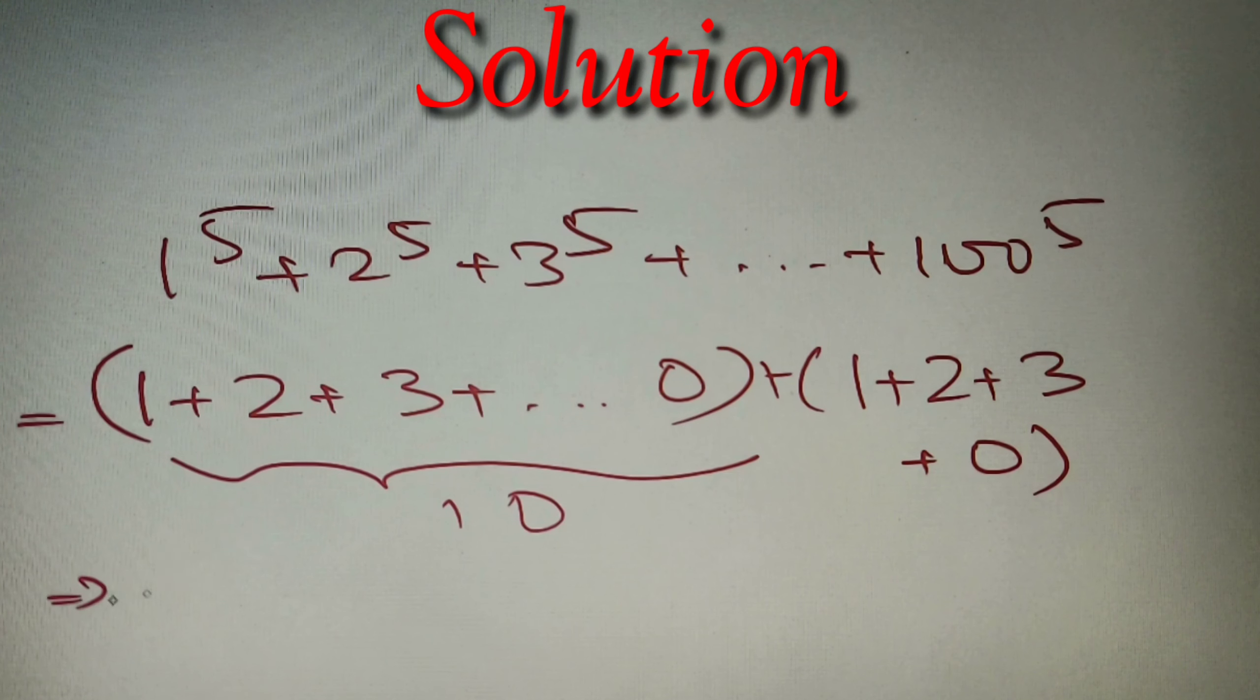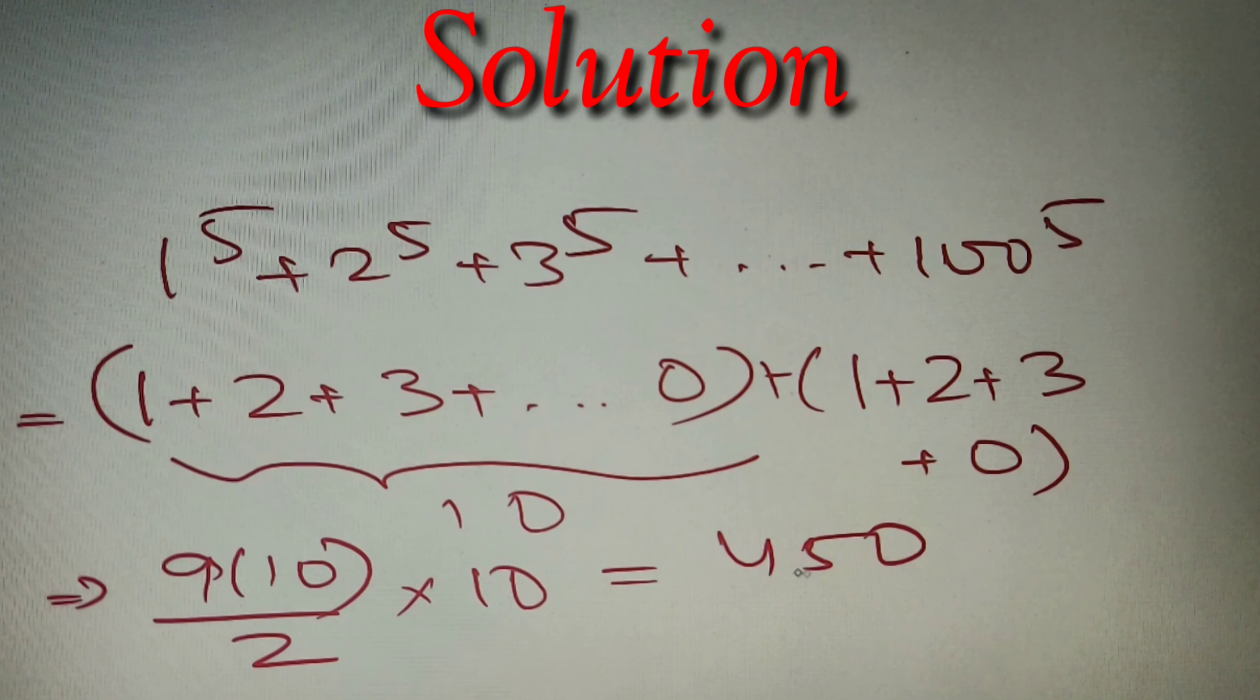We'll get 9 into 10 whole divided by 2 for each set. Since we have 10 sets, the total sum is equal to 90 by 2 into 10, which is equal to 450.